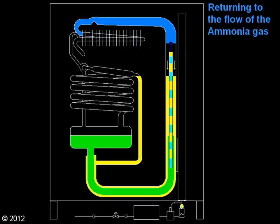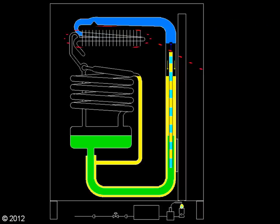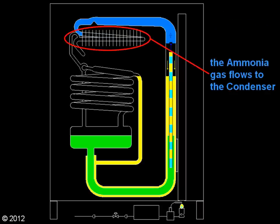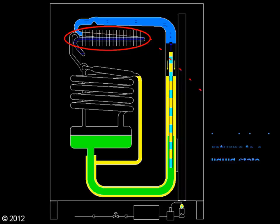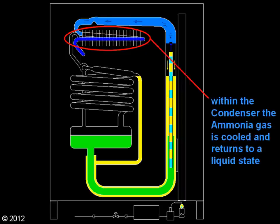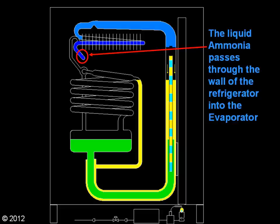Returning to the flow of the ammonia gas: ammonia gas flows to the condenser. Within the condenser, the ammonia gas is cooled and returns to a liquid state. The liquid ammonia passes through the wall of the refrigerator into the evaporator.